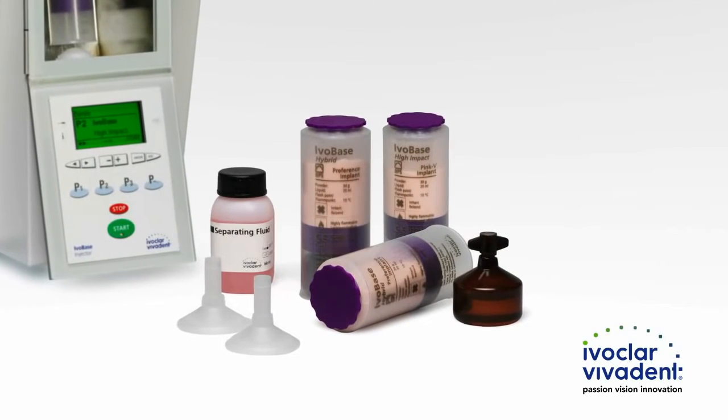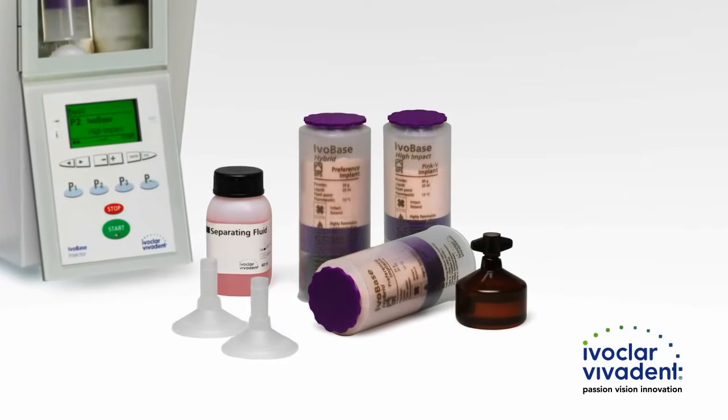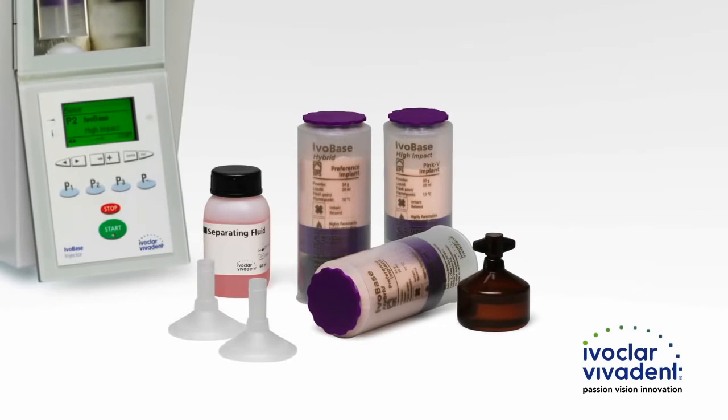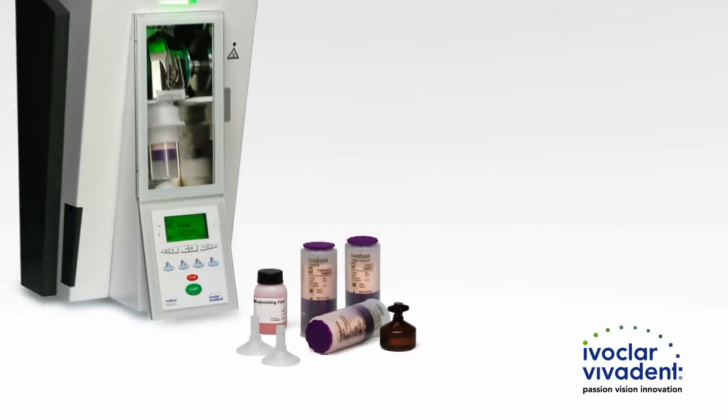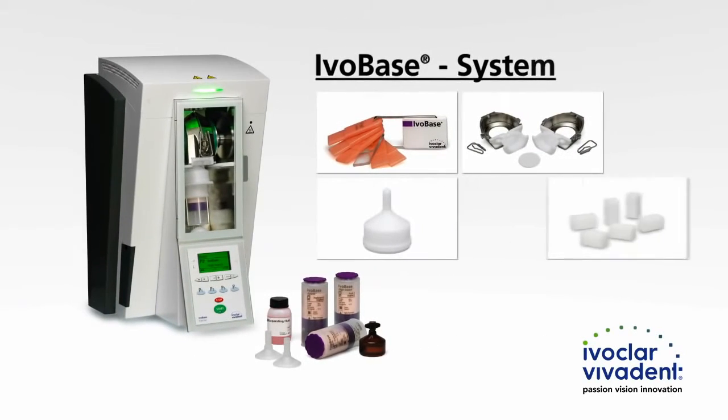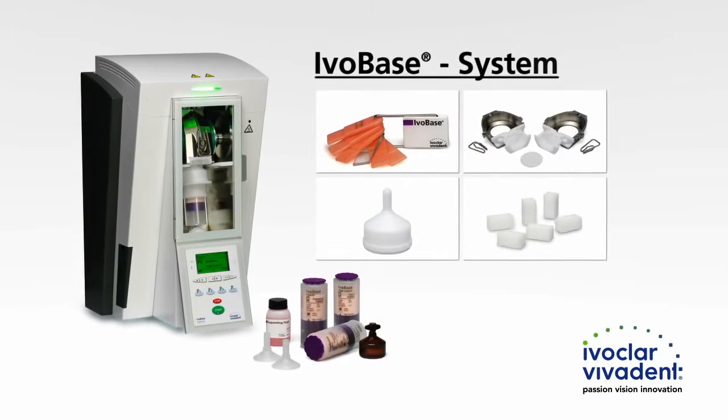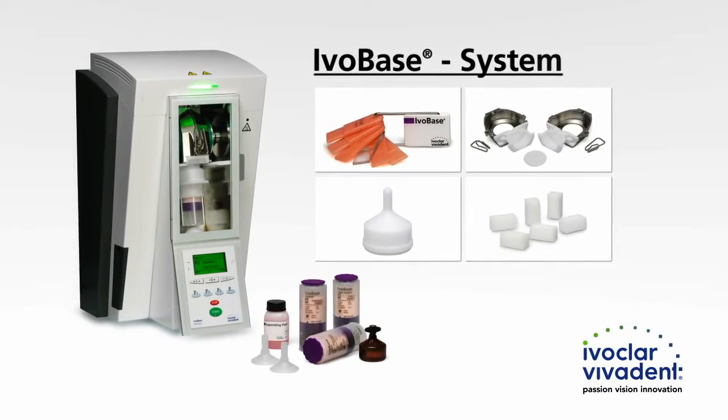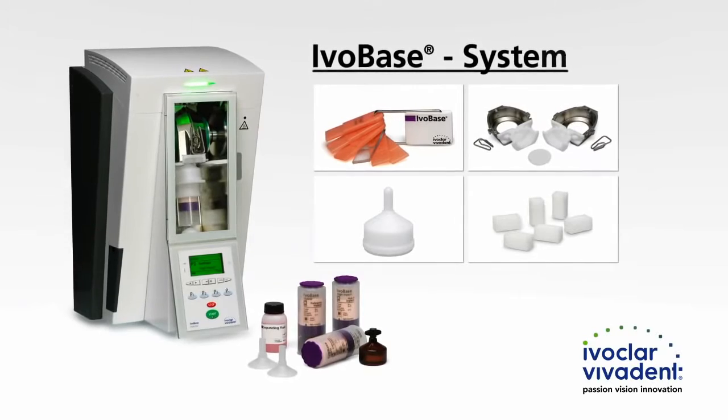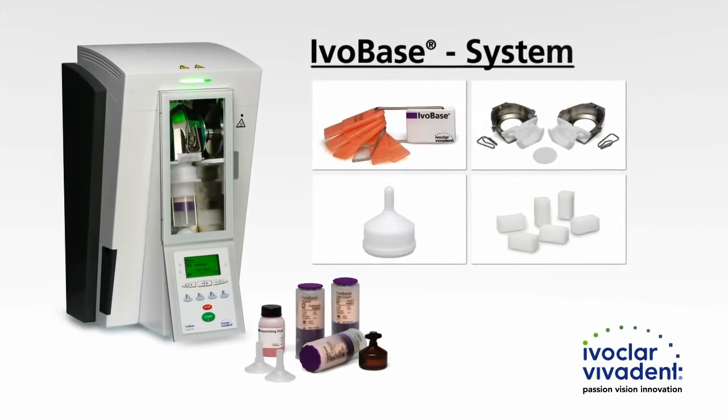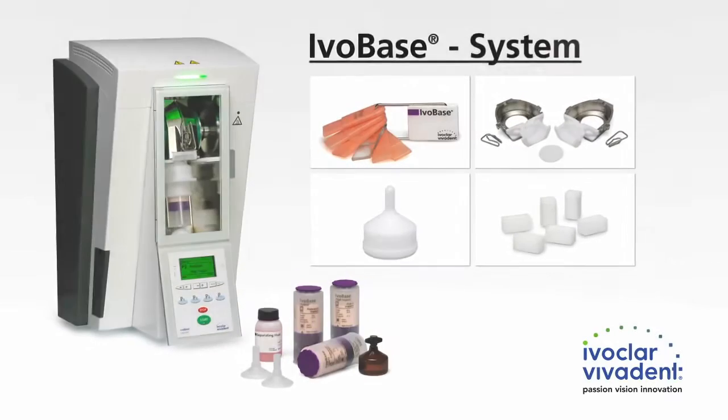The IvoBase material used is available in two versions, IvoBase Hybrid and IvoBase High Impact. This instructional video introduces you to the use of the individual system components and points out special features. Please refer to the instructions for use for more detailed information.